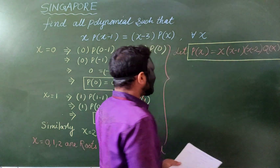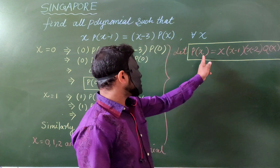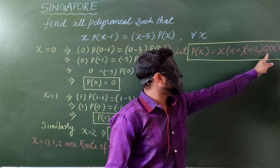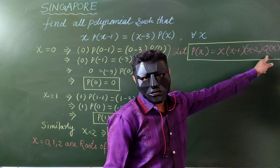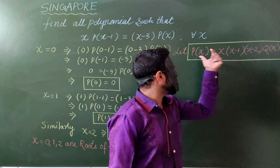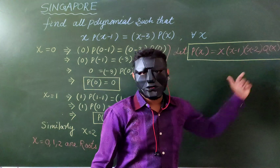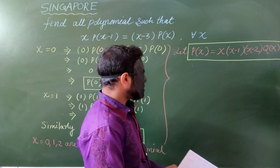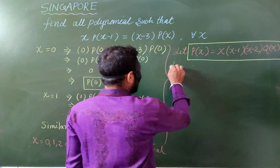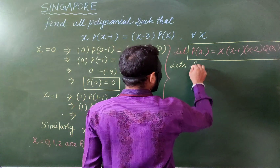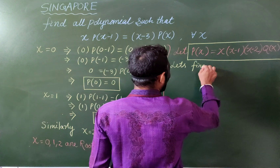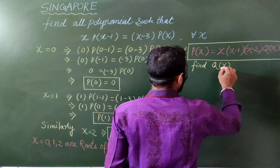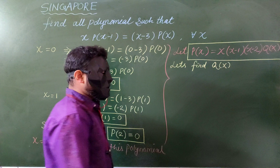This polynomial is almost determined. We just have to define q(x) only. After substituting this value back into the original equation, we will get the entire form. So the last step left is to find out q(x).